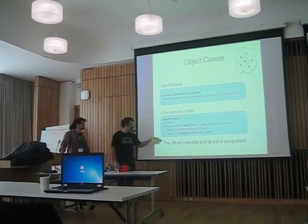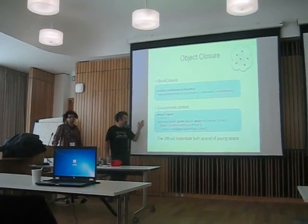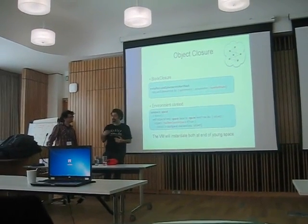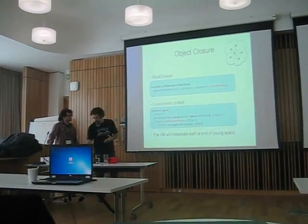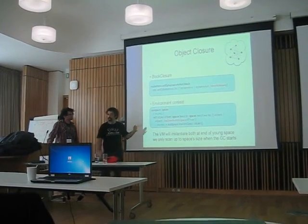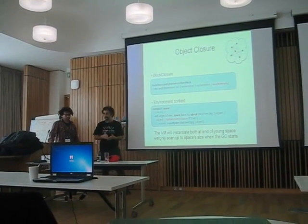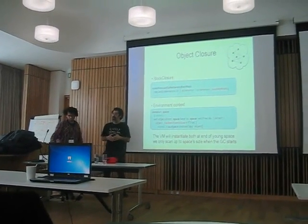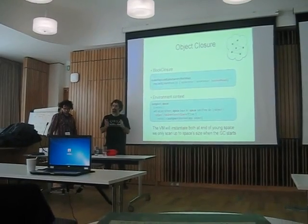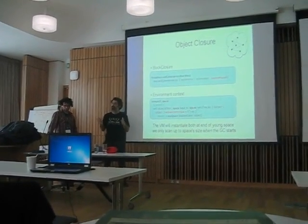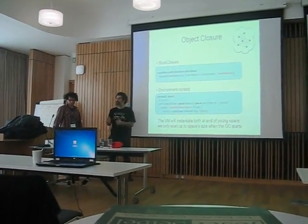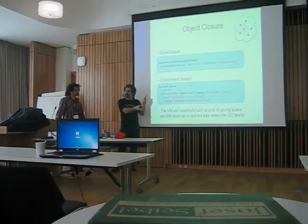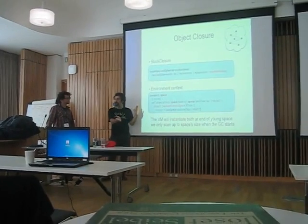The VM will instantiate objects into the young space. And the young space is actually what we are scanning. So what we do is we only scan up to the space size after the point where we started the GC. On entry to our GC, we save the size of both the old space and the young space, and anything that is created after the size at entry — we just don't scan it.